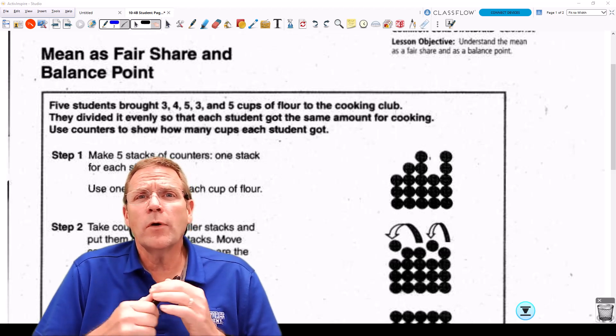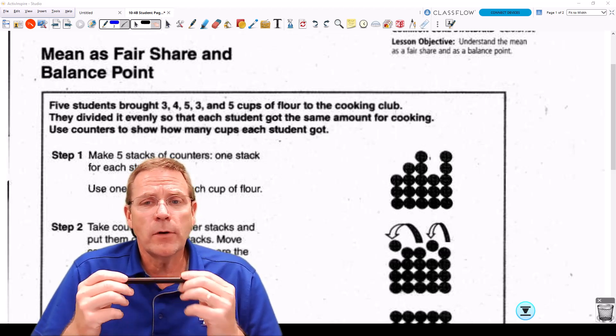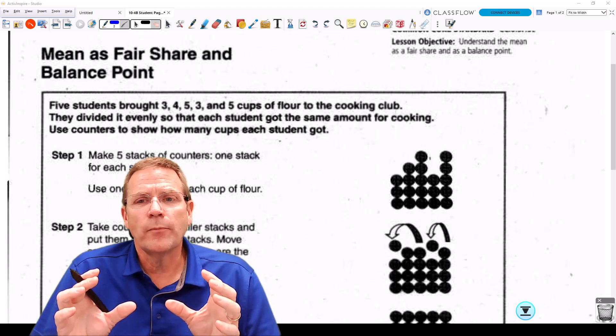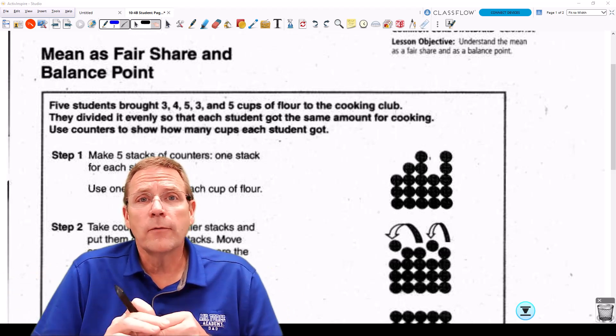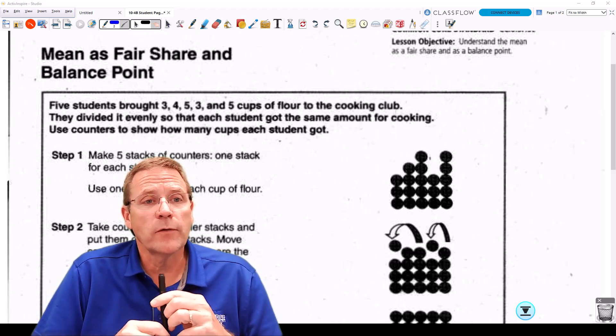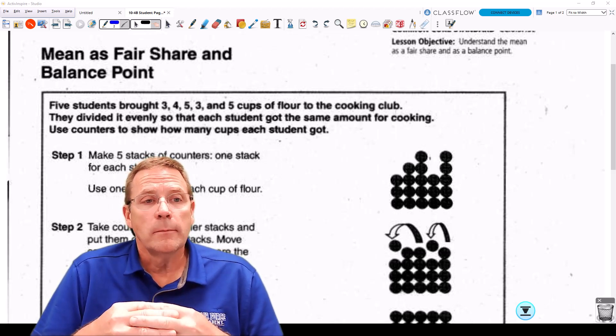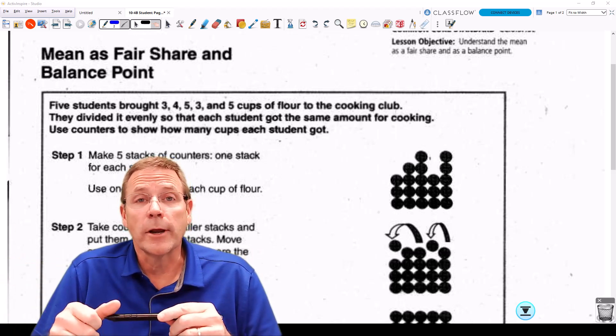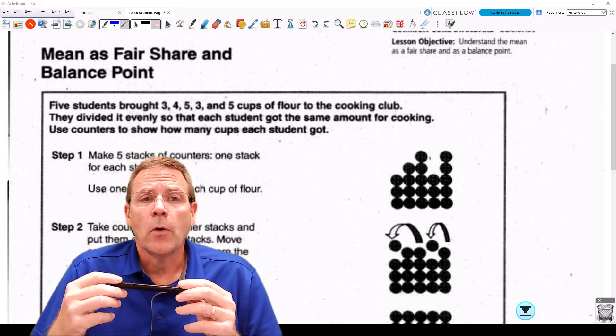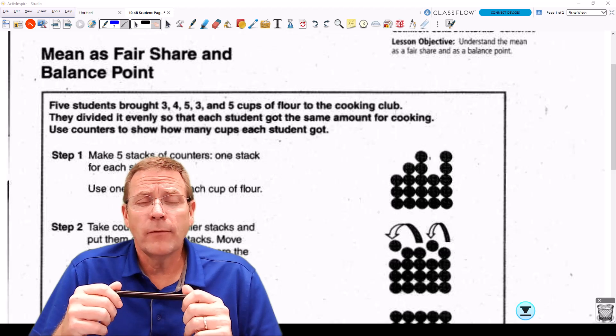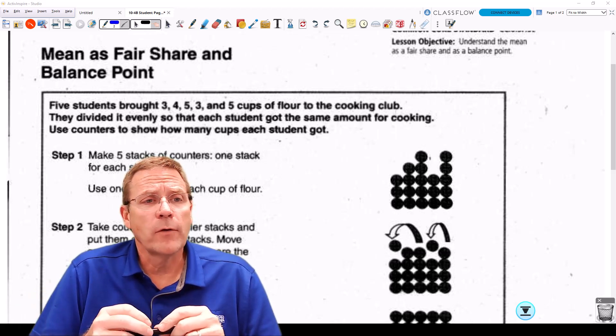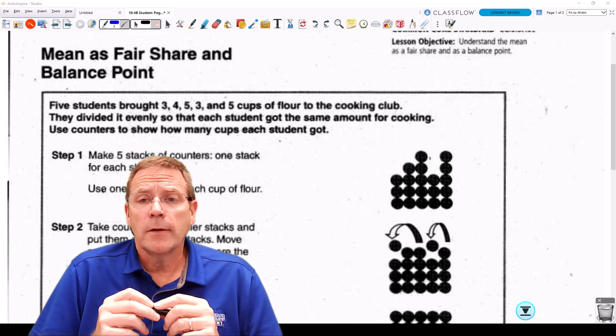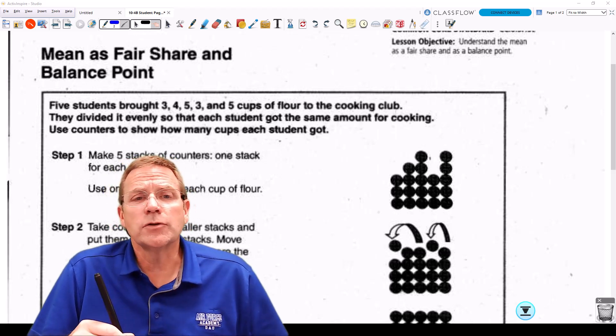Now we're going to look at a couple different ways of solving for mean. The very first thing we're going to do is understanding that the mean is essentially a fair share, or the average of a set of things. So what we have in this problem is five students brought some flour to a cooking club. One student brought three cups, one student brought four cups, one five, another three, and then another one brought five cups. And they divided it evenly so that each student got the same amount for cooking.